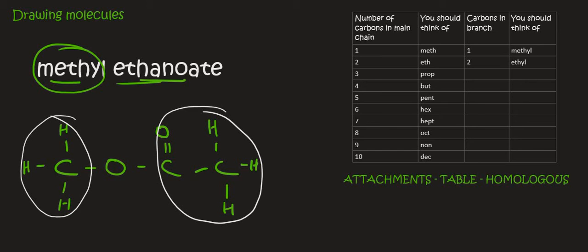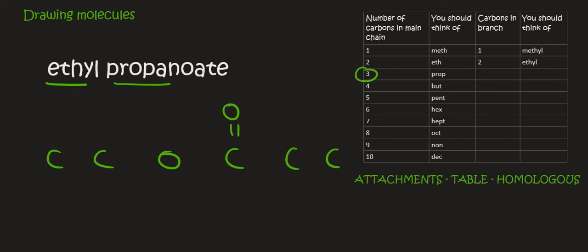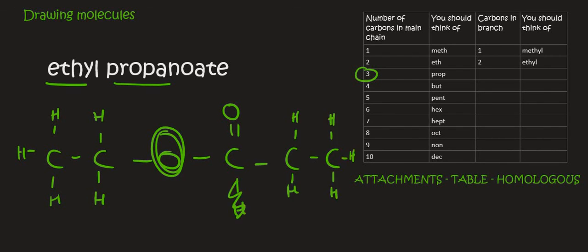If you're struggling a bit with that, that's fine because this one is a bit weird, so let's practice one or two more. Here's ethyl propanoate — it's also an ester. The alcohol part is always first: that's two carbons. Then just remember an oxygen. Then the propanoate — that's three carbons. Then remember the first carbon must have the double bond oxygen. The rest is easy — just hydrogens everywhere. Notice I don't attach anything to oxygen, since it's only carbon that needs the four bonds.